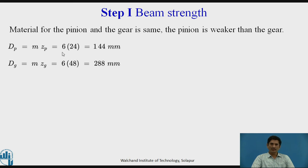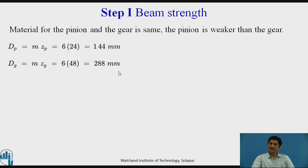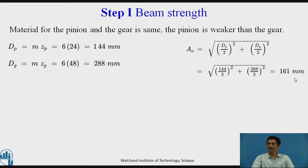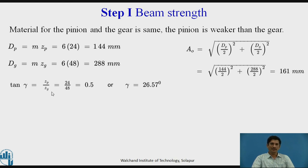Dp = m × Zp = 6 × 24 = 144 mm. Similarly for the gear, Dg = 6 × 48 = 288 mm. From these we calculate the cone distance: A₀ = √((Dp/2)² + (Dg/2)²), giving A₀ = 161 mm. Next, tan(gamma) = Zp/Zg = 24/48 = 0.5, so gamma = 26.57 degrees.